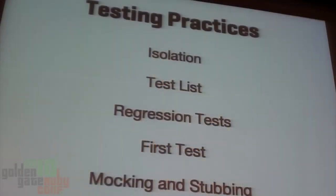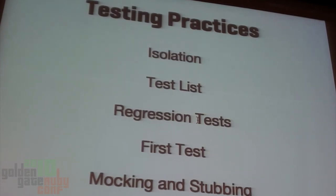Let me go over my list of testing practices quickly. Isolation between tests — your tests should not affect one another, which is the antithesis of state leak. A test list, when you're writing tests that drive development, is essential to keep work focused and prevent scope creep. Regression tests are a critical way to provide feedback and improve trust in your code — when you fix a bug, write a test first, then ask yourself why you didn't write that test before writing the code. The first test you write at the beginning of the day should be one you're confident you can implement and that will teach you something about the system. I also talked briefly about the perils of mocking and stubbing. Thank you all very much.